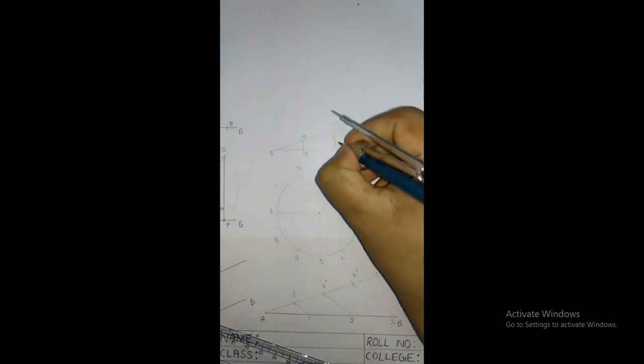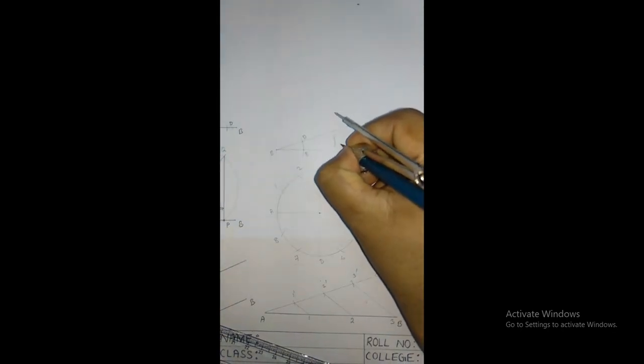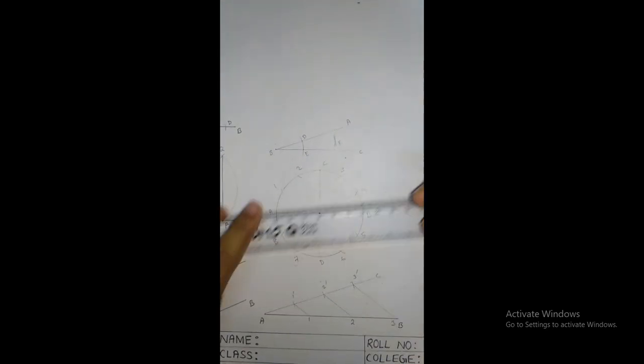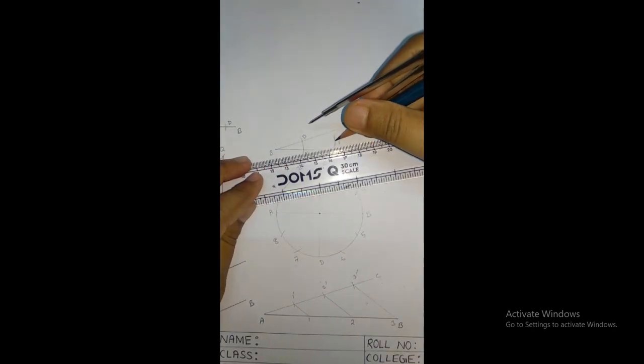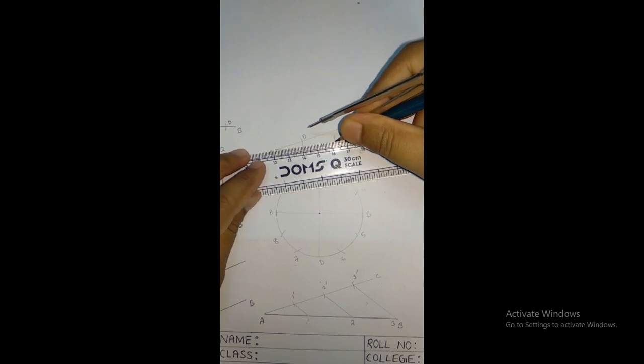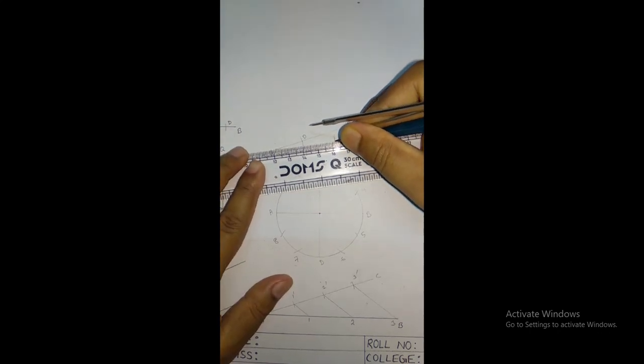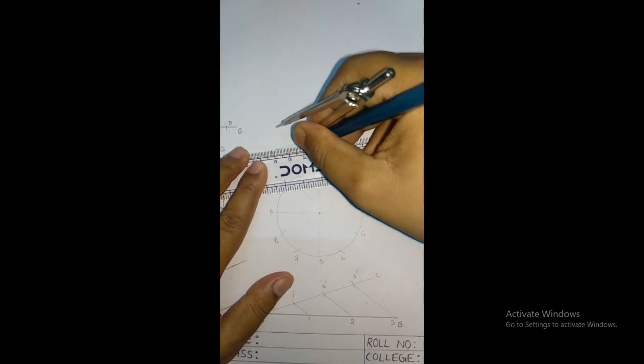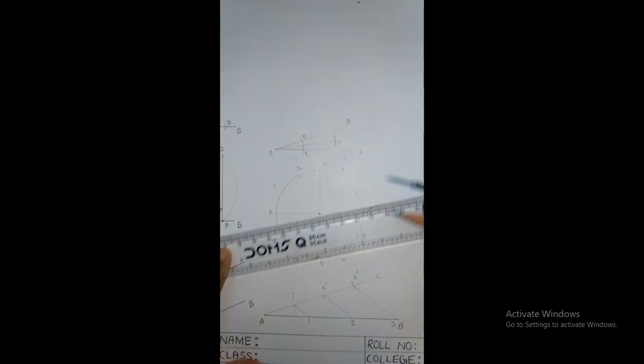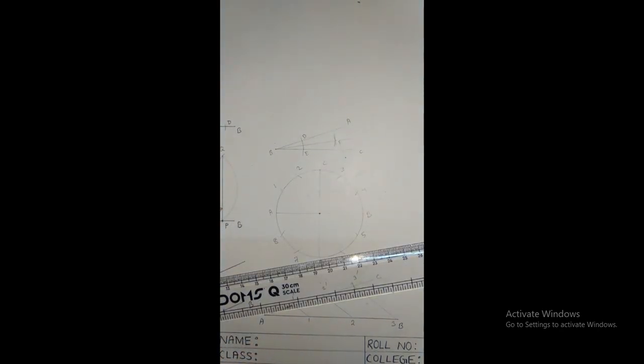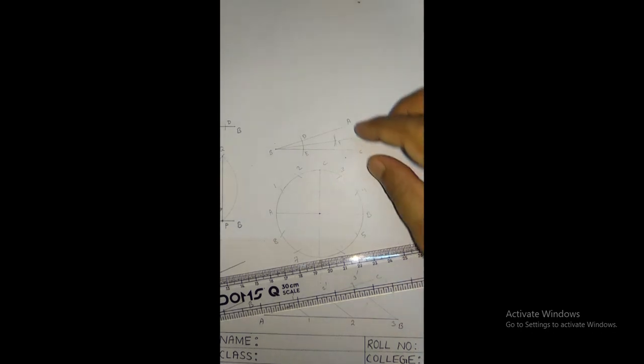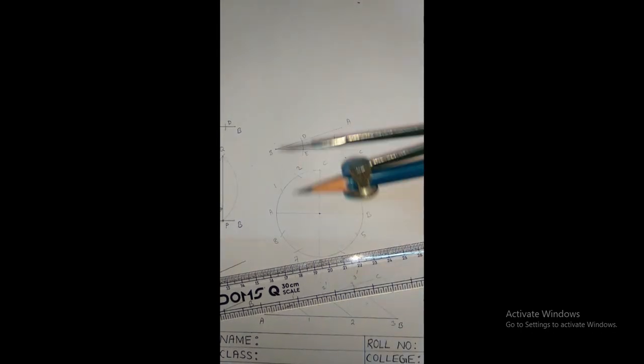So this is my intersection point. Suppose this intersection point is my F. Now you can join this. So in this way we can bisect a given angle. Now this angle and this angle, both are equal. This angle and this angle, both are equal.